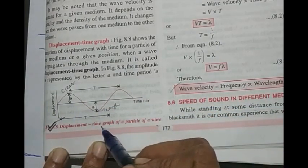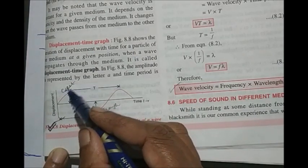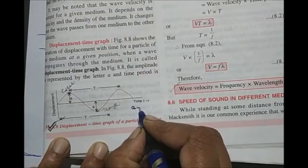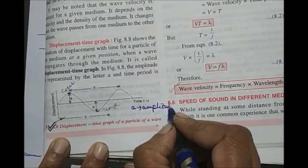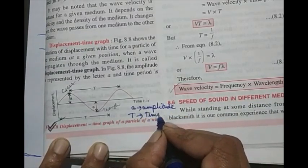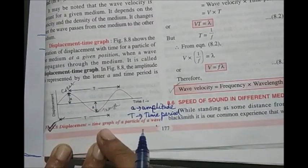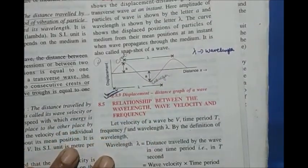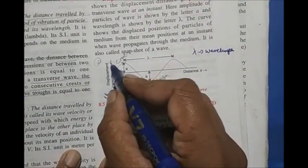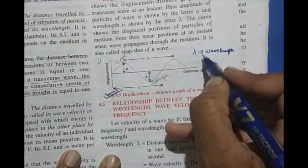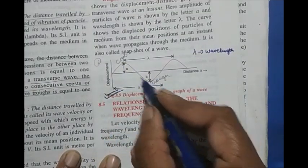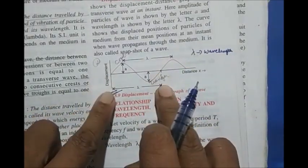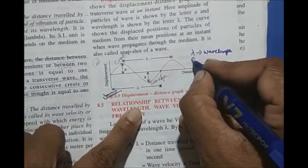Then these are the labellings you have to do: mark crest, trough, amplitude A, and time period T. Below this write: A = amplitude, T = time period. A displacement-time graph will give you the time period. The next graph asked very often is the displacement-distance graph — x-axis is distance, y-axis is displacement. Draw a transverse wave and mark crest, trough, amplitude, and here you won't have time period but you will have wavelength. Mark it as lambda — lambda is wavelength and A is amplitude.